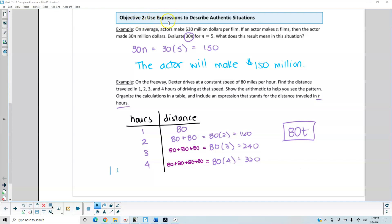Objective 2: Use expressions to describe authentic situations. On average, actors make 30 million dollars per film. If an actor makes n films, then the actor made 30 times n million dollars.